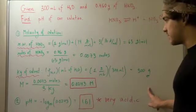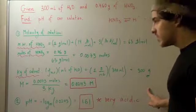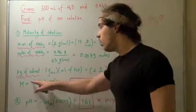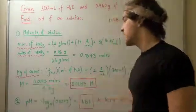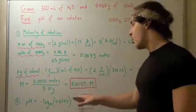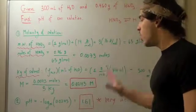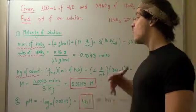Now to find molarity, we simply take our moles of solute, divide that by kilograms of solvent, and we get 0.0243 molar. So that's our molarity.